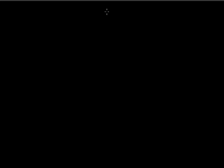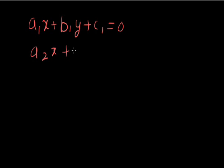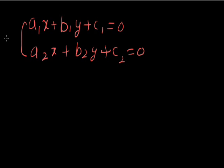Now we talk about a pair of linear equations. We take two linear equations: a1x plus b1y plus c1 equal to 0, and a2x plus b2y plus c2 equal to 0. Each equation individually has infinite solutions. But when we consider both equations simultaneously, any value of x and y that satisfies both equations at the same time gives a unique solution. We have three methods for finding this solution.